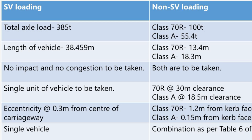5. Eccentricity from the Center of the Carriageway. In SV loading, the load is considered to be 0.3 meters away from the center of the carriageway. In non-SV loading, different eccentricities are considered for each loading: for Class 70R loading, 1.2 meters from the curb face, and for Class A loading, 0.15 meters from the curb face is considered.